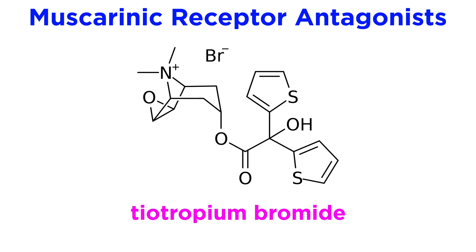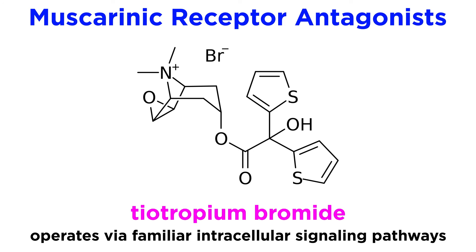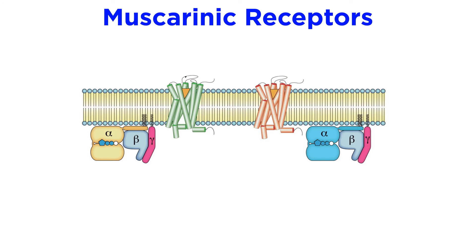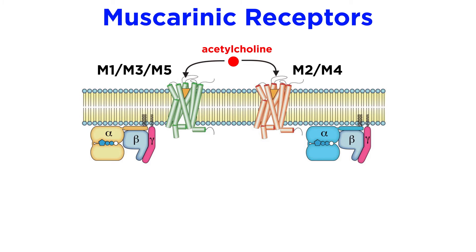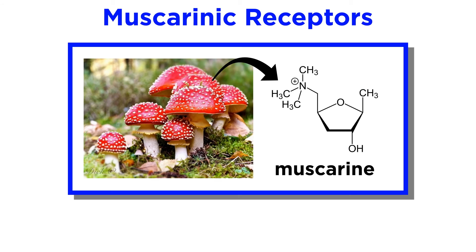The other class of bronchodilators we must discuss are the muscarinic receptor antagonists, such as tiotropium bromide. Due to the overlapping aspects of intracellular signaling, a good mechanistic understanding of beta-2 adrenoceptor agonists makes an understanding of muscarinic receptor antagonists relatively straightforward. There are five subtypes of muscarinic receptors — M1, M2, M3, M4, and M5 — and these are all activated endogenously by acetylcholine. Interestingly, they are named muscarinic because of the discovery of the agonist muscarine, a powerful toxin produced by many species of mushrooms, which we have discussed at great length in the mycology series.